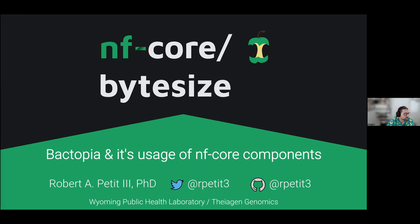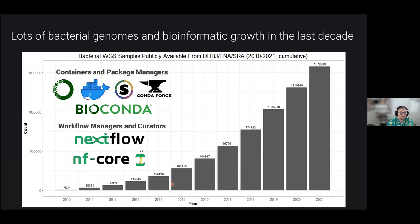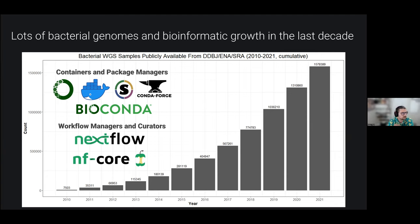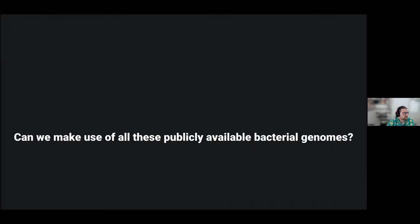A little motivation on how Bactopia came up. Over the last 10 years, we saw quite nice growth in publicly available bacterial genomes from ENA, SRA, and DDBJ. We went from about 7,500 in 2010 to about 1.5 million. While that pales in comparison to COVID, which is 12 million plus, for bacteria that is quite a lot. Over these last 10 years, we've also seen the rise of containers and package managers such as Docker, Singularity, and Bioconda, and then workflow managers such as Nextflow and NFCore.